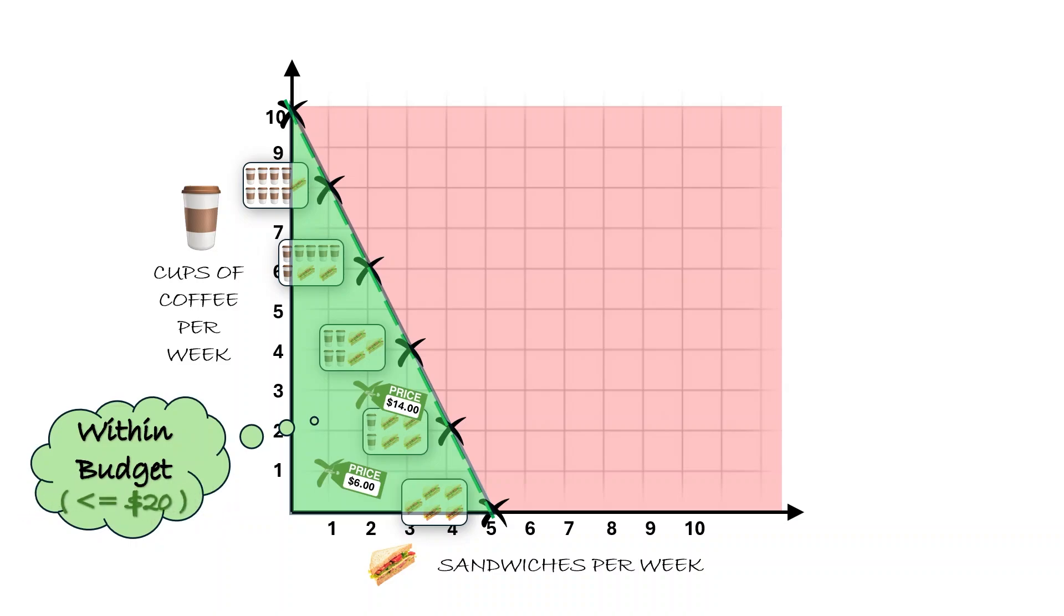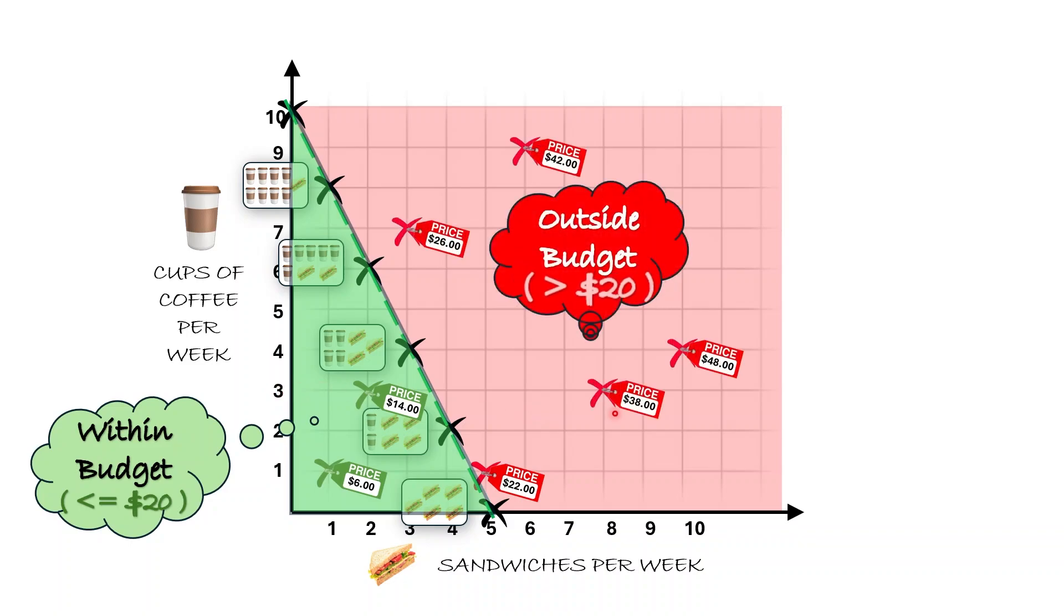Maybe you wish you could buy 3 cups of coffee, which is here, 3 cups of coffee and 8 sandwiches. 8 sandwiches is here, or 1 cup of coffee and 5 sandwiches. But you cannot as these two combinations are out of your budget. These cost more than $20.